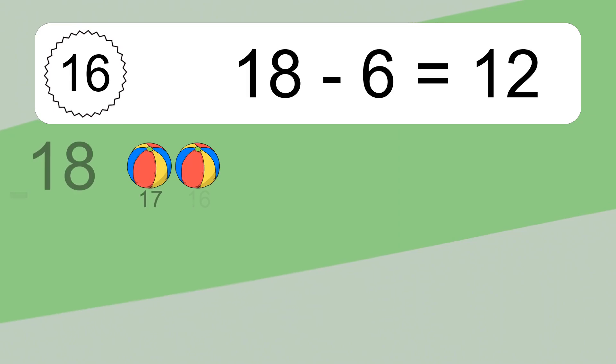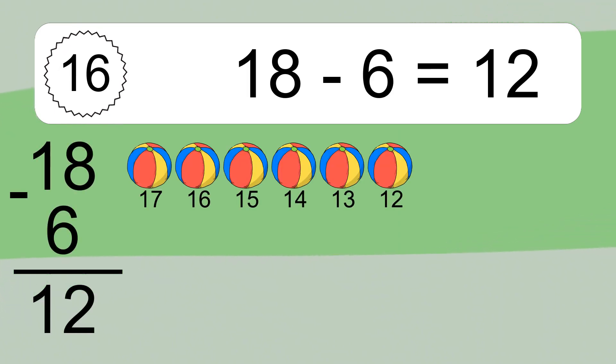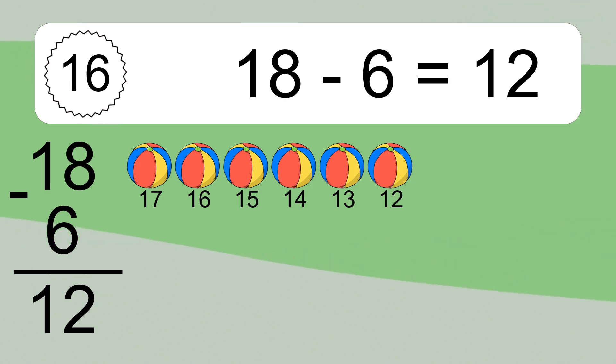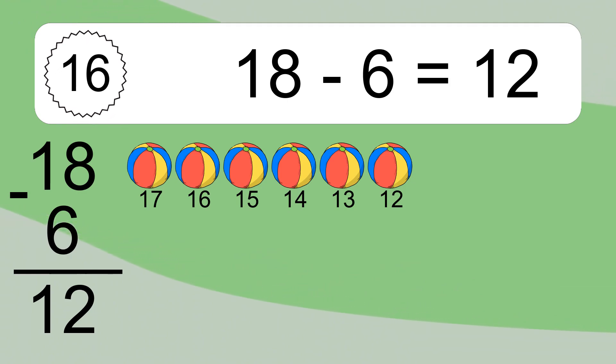18 minus 6 equals what? 18 minus 6 equals 12. Let's count it: 17, 16, 15, 14, 13, 12.